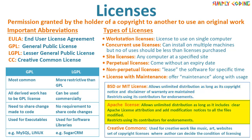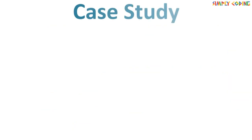Next is the Apache license. It allows unlimited distribution as long as it includes clear Apache license attribution and you add modification notices to all files modified. This license also restricts using its contributors for endorsements. Other than these, we also have the Creative Commons license, which is used for creative works like music, art, and websites. It is actually a set of copyright licenses where the author can decide the conditions of licensing. You should take a screenshot of this for your last-day revision.